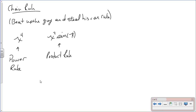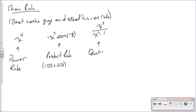For the product rule, that's one times d2 plus two times d1. Now if you had something like x squared over x cubed minus 1, since you're dividing the two, you're going to use the quotient rule, which is low times d-high minus high times d-low over low squared.